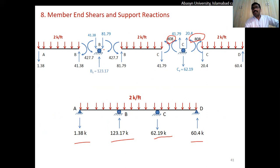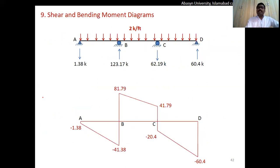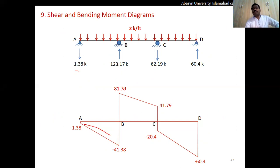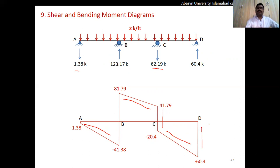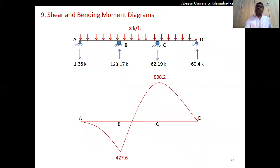From the member end moments we calculate member end shears and then support reactions. The shear force diagram starts at A with a negative value, decreases linearly due to the UDL, increases at each intermediate reaction, and closes to zero at D. The bending moment diagram shows M = 0 at A and D, with interior values of −427.6 kip-ft at B and +808.2 kip-ft at C.